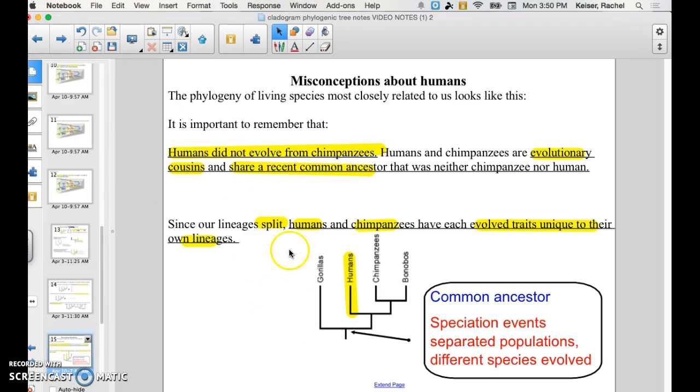So a misconception about humans. In cladograms, in your textbook or online, you'll see that humans are nestled within a clade. And humans, the misconception is that humans evolved from chimps. That is incorrect. In fact, the more correct way to say it is that we share a recent common ancestor to modern-day chimpanzees and bonobos.